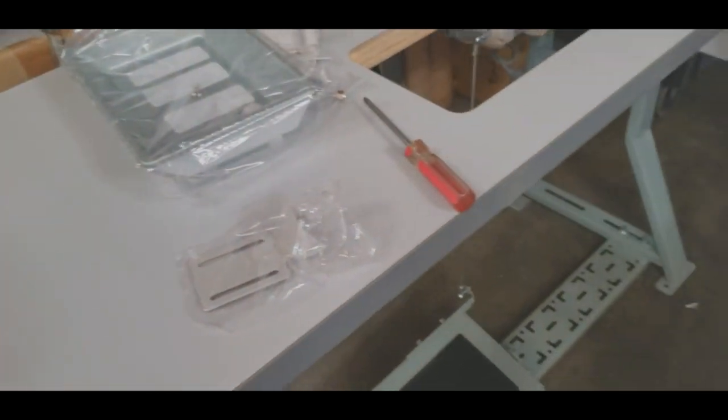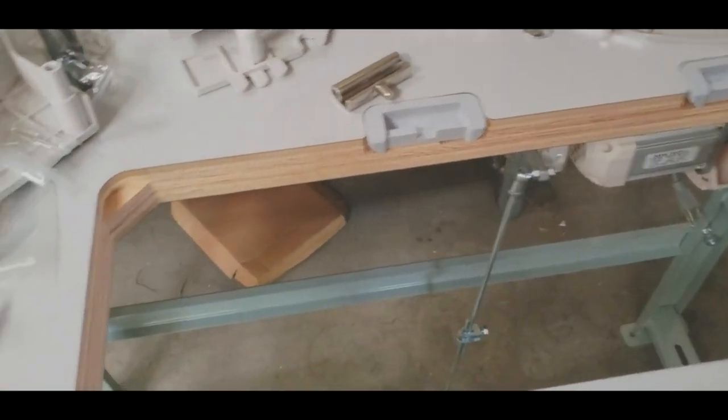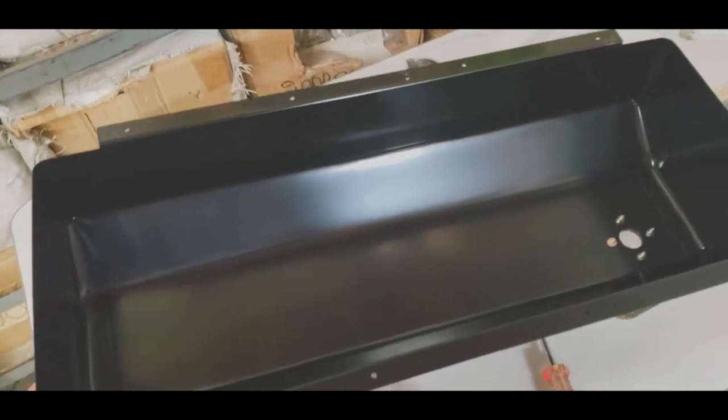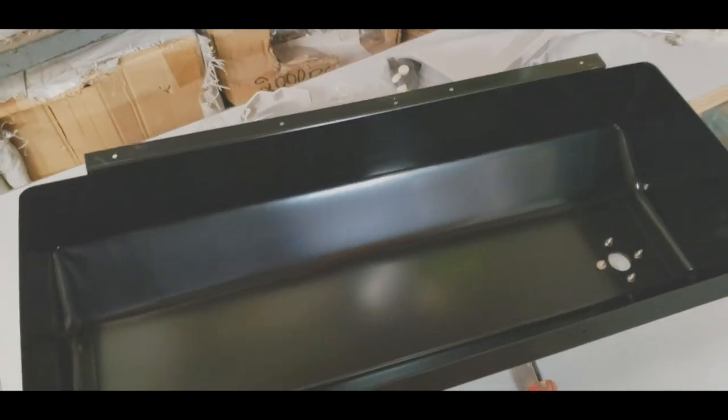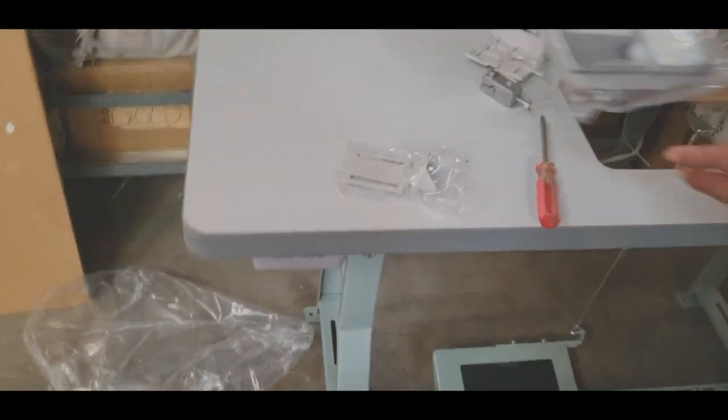This machine is semi-dry, meaning that the oil goes inside the machine. It's not an oil pan, it's an oil drop. Everything is set up the same way as the regular sewing machine.